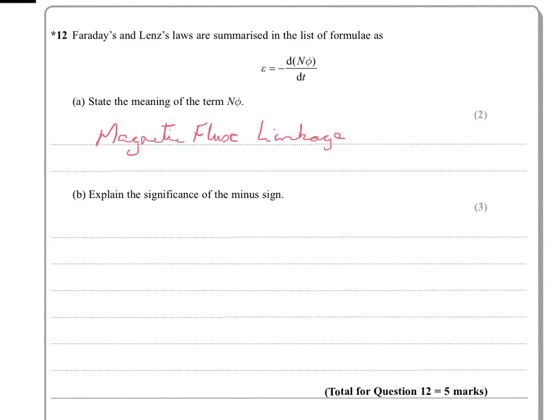Explain the significance of the minus sign. Well, the minus sign, remember, comes from Lenz's law. And you need to explain there that the EMF, according to Lenz, would always try to oppose the change causing it. So the minus sign goes in to indicate that the EMF is trying to oppose what is causing it.